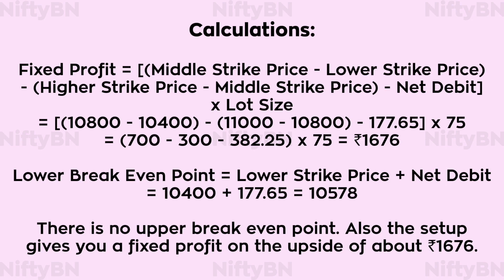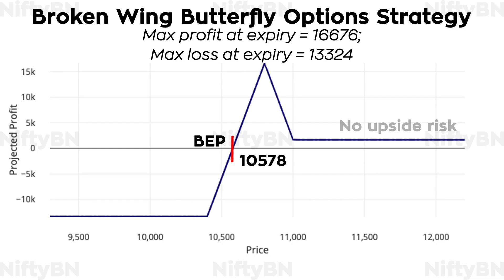Fixed profit is equal to middle strike price minus lower strike price minus (higher strike price minus middle strike price) minus net debit, multiplied by lot size, which comes to about Rs 16,676. Lower breakeven point is equal to lower strike price plus net debit, which comes to about Rs 10,578. There is no upper breakeven point. The setup gives you a fixed profit on the upside of about Rs 16,676. Now let us look at the risk graph: the strategy has no upside risk if placed correctly, the breakeven point is below at-the-money at Rs 10,578, the maximum profit at expiry is Rs 16,676, and the maximum loss at expiry is Rs 13,324.